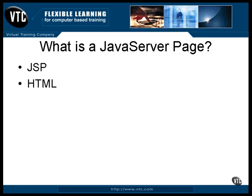A Java server page is a web page of HTML tags, but it has Java code embedded inside it in a special tag format. You can put just about any Java code you would like inside a JSP page. A web browser can't display the page in that form — the Java code has to be compiled and run first, and all that happens on the server.